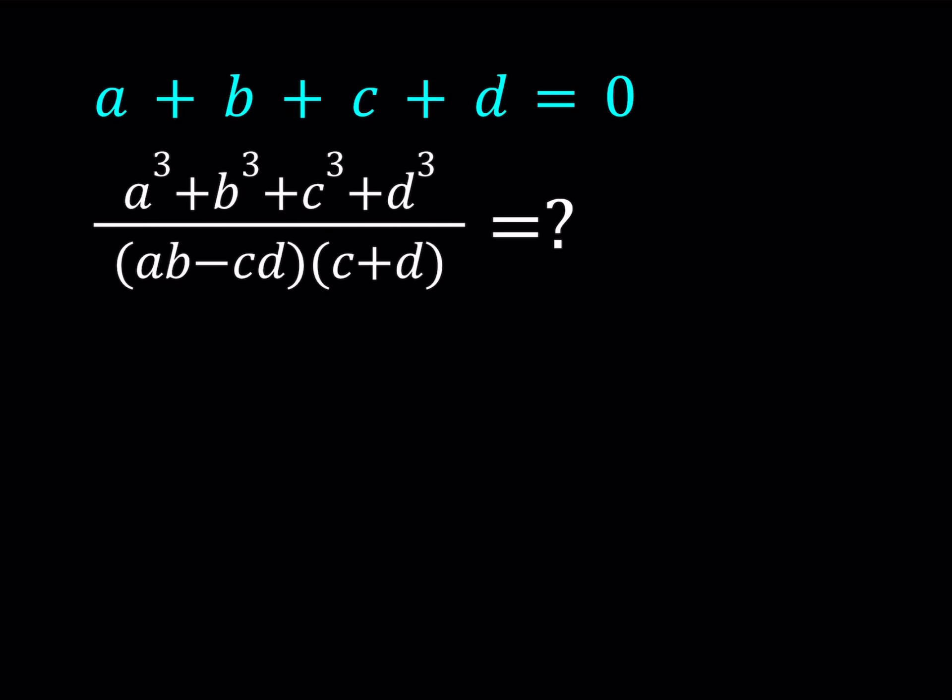Hello everyone, in this video we're going to be simplifying an algebraic expression. We're given that A plus B plus C plus D is equal to 0, and we're supposed to evaluate this quantity A cubed plus B cubed plus C cubed plus D cubed divided by the product of AB minus CD and C plus D.